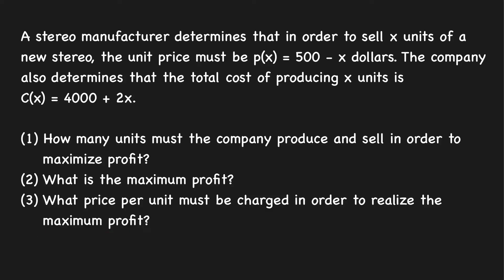There is a two-step strategy in solving optimization problems. The first step is to write our objective function — the quantity we want to maximize or minimize — in terms of a single variable, and determine its domain. The second step is to apply maximum and minimum principles such as the closed interval method, first derivative test, or second derivative test to find the maximum or minimum value. Let's perform this procedure to solve this problem.